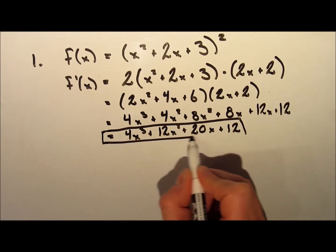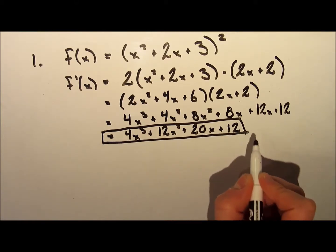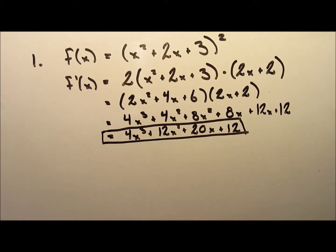After simplifying, we get down to our final answer which is 4x cubed plus 12x squared plus 20x plus 12.